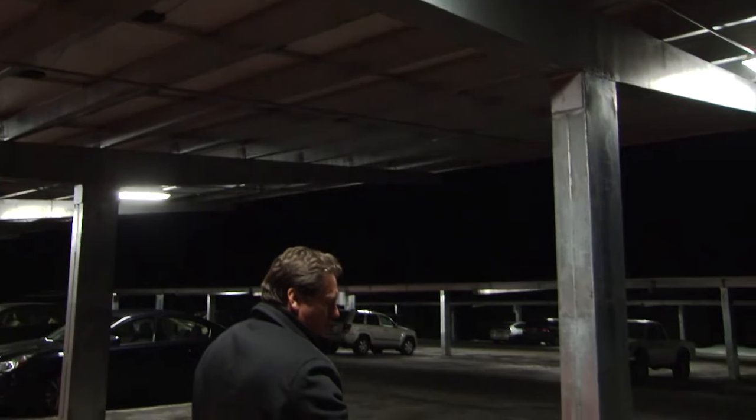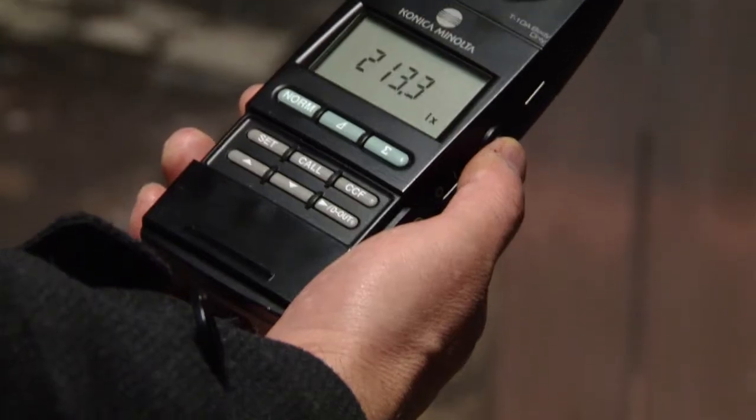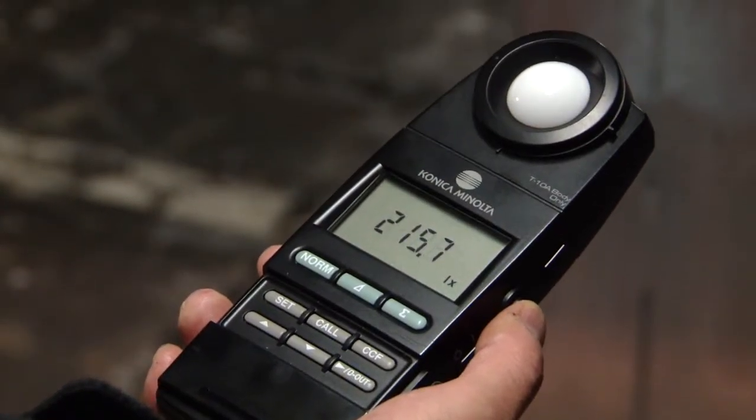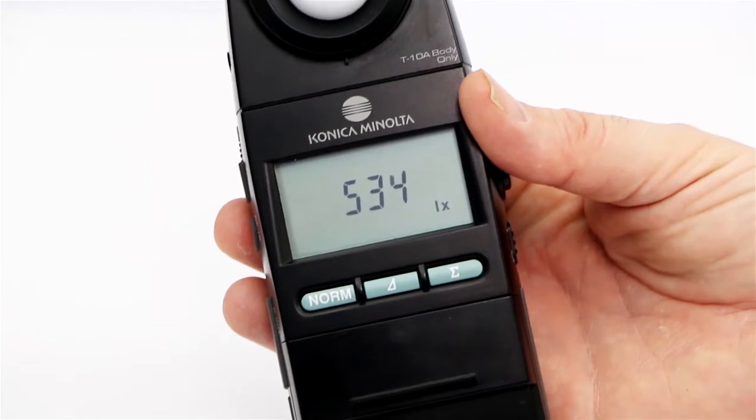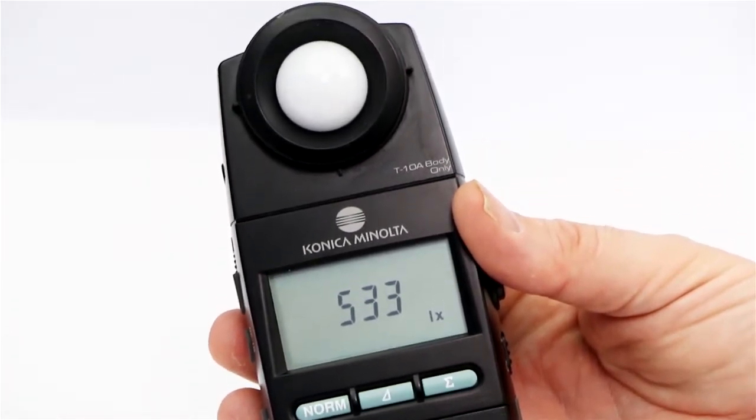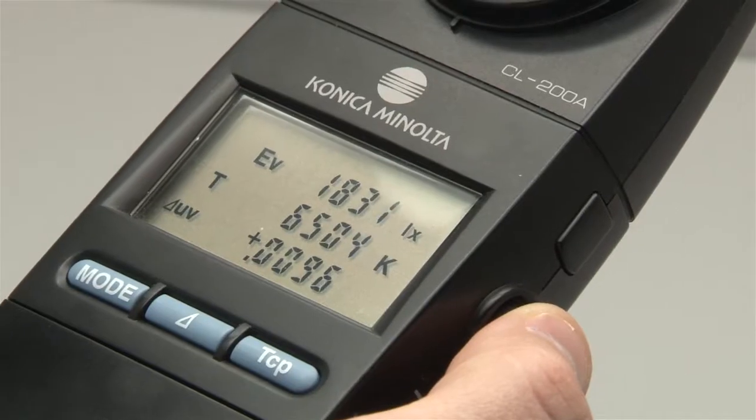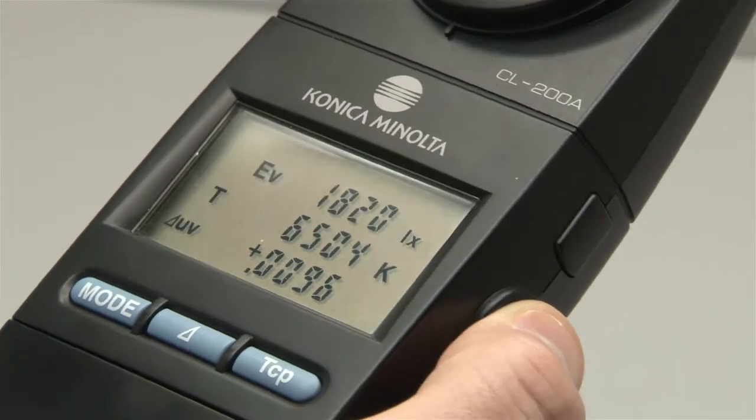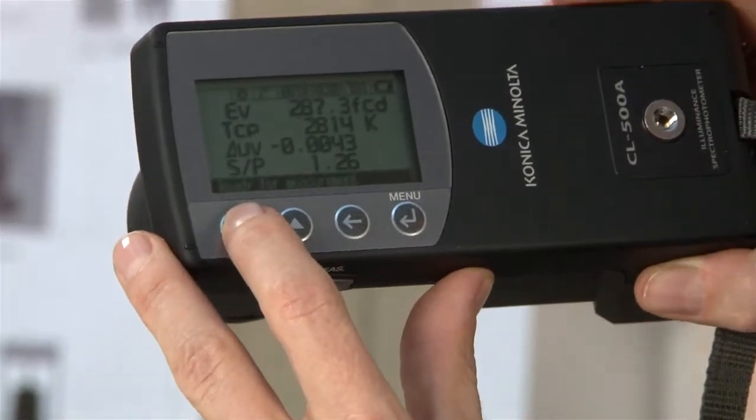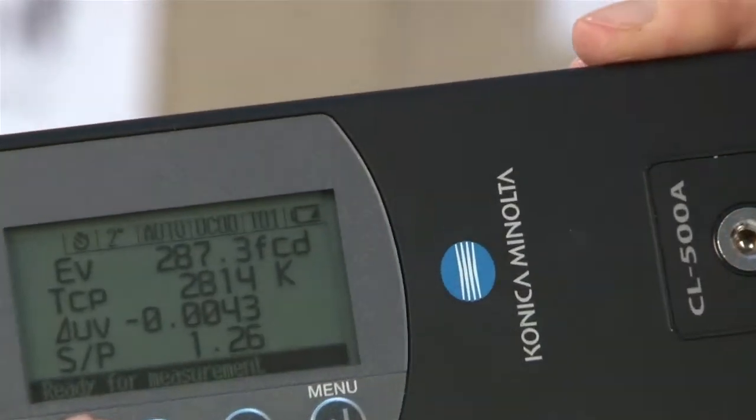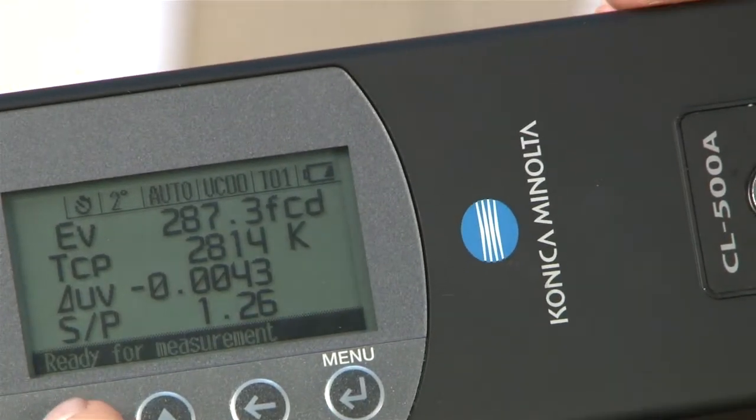Typically, illuminance meters are a very common application for research and development or quality control. Illuminance meters really can play a role through any of those functions. So we offer the T10A for just luminance, we have a CL200A for luminance and color, and we have a CL500A, which is a spectral-based illuminance and color meter.